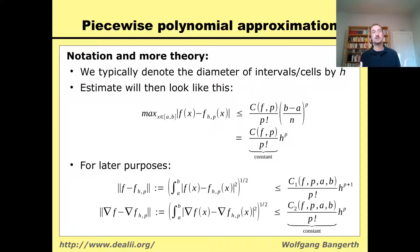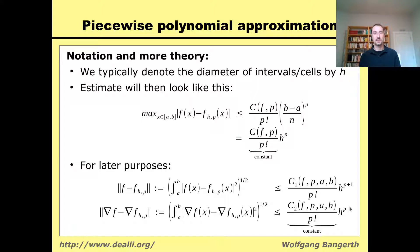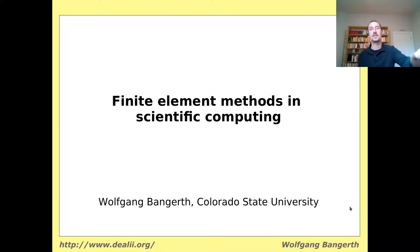You will see these estimates in numerous other occasions. In one of the next lectures, we will relate the error in the finite element solution to the error in an interpolant. It will turn out that the finite element solution is always at least as good as the interpolant, and for the interpolant we use these estimates. Note also that all three estimates stated here in 1D also work in 2D and 3D, and we will use them for estimating error in any arbitrary dimension.